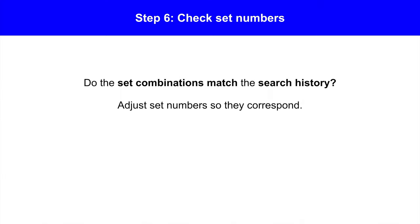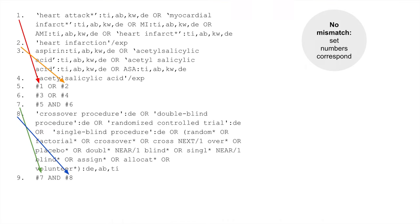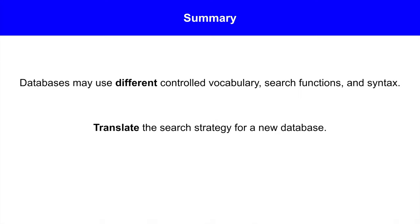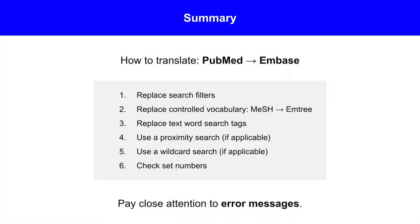In the final step, check the set numbers. Do the set combinations still match the search history? You may need to adjust the set numbers so they correspond. Looking at our set numbers, I don't see any mismatch — the set numbers correspond. A quick note: the AND and AND-parentheses operators do not require translation, as they are the same in PubMed and Embase. In summary, databases may use different controlled vocabulary, search functions, and syntax, so you will likely need to translate the search strategy when switching to a new database. This video showed you how to translate a search from PubMed to Embase through six steps. After running a translated search, pay close attention to any error messages in the database — ideas can get lost in translation.